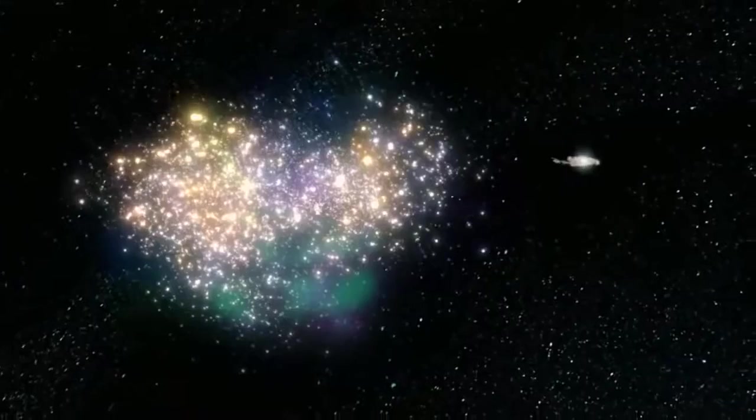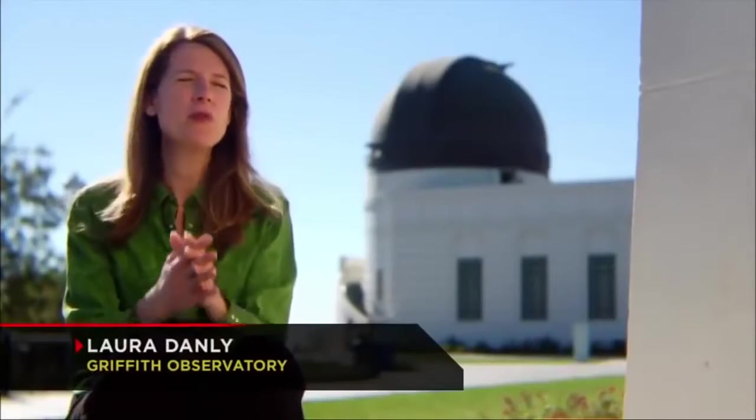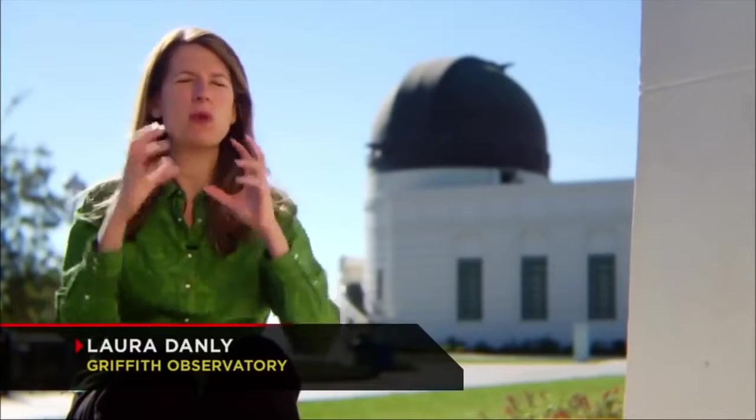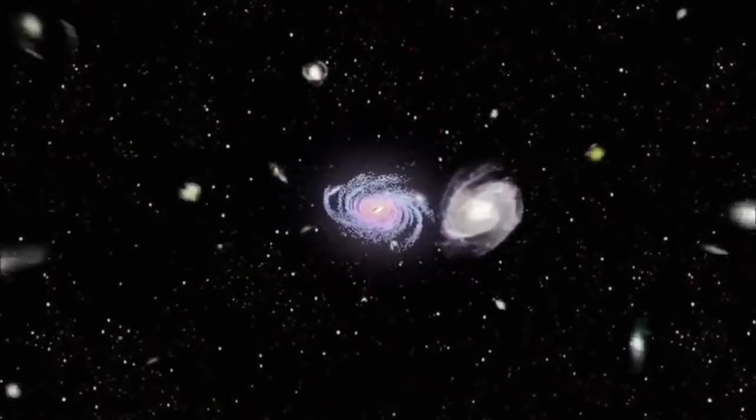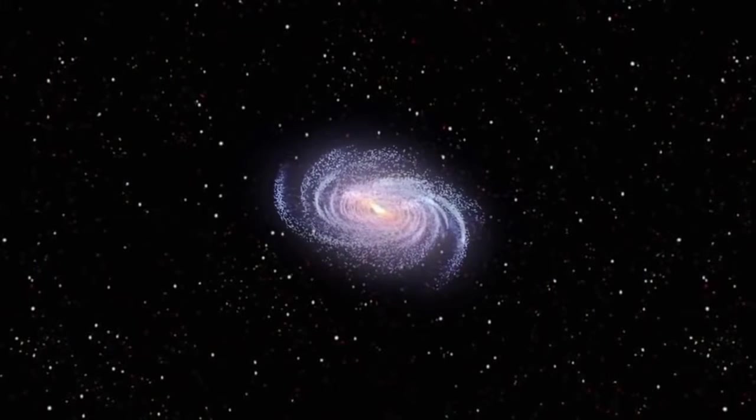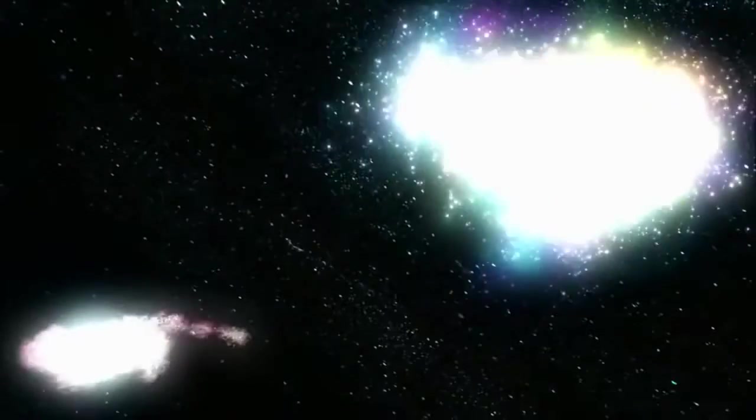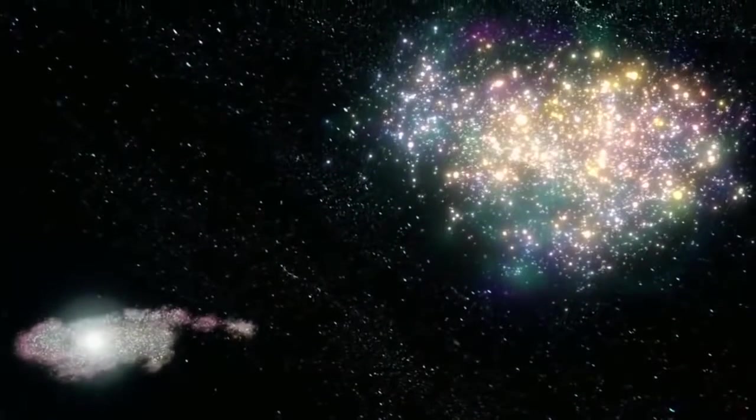The enormous amounts of energy being put out by these ultraluminous infrared galaxies are the result of huge bursts of star formation. In our galaxy, about one new star the size of our sun is born every year. But in ULIRGs, about 100 new stars are formed yearly.